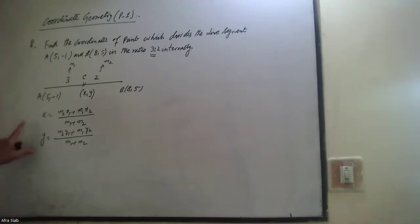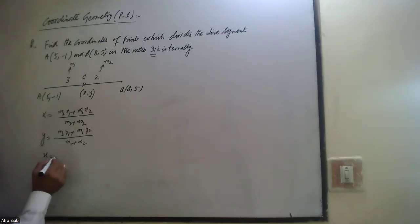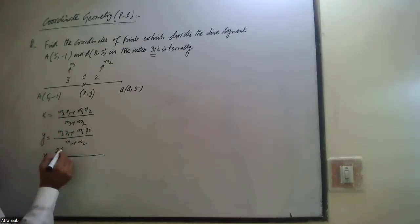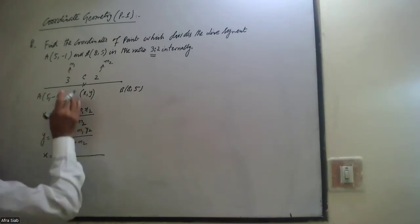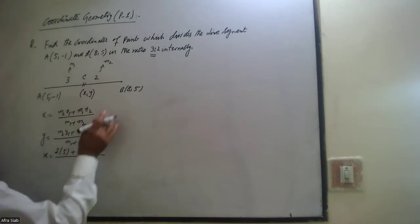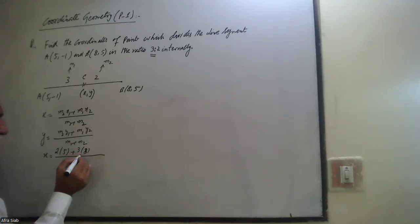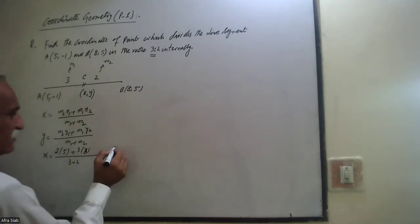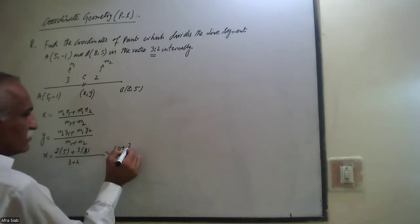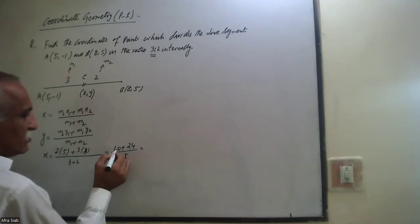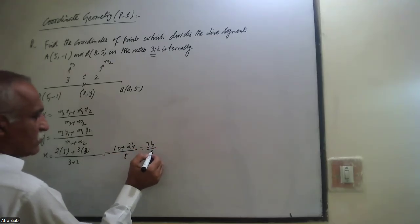So the x-coordinate will be equal to m2, that is 2, multiplied by x1, which is 5, plus m1, which is 3, multiplied by x2, which is 8, divided by 3 plus 2. That gives us 10 plus 24 divided by 5, which is equal to 34 over 5.